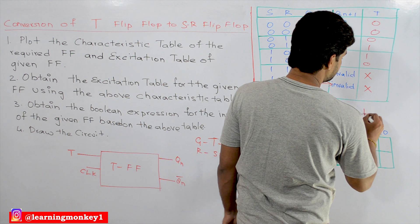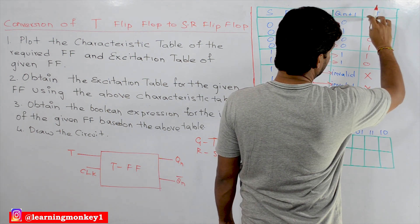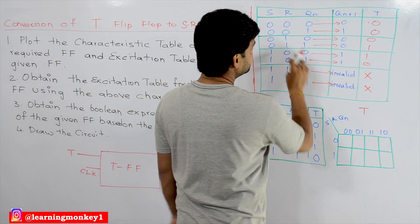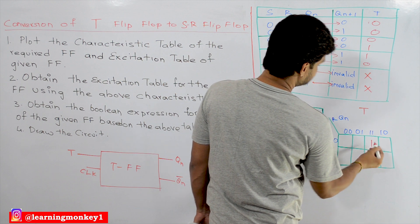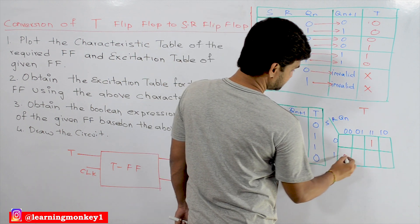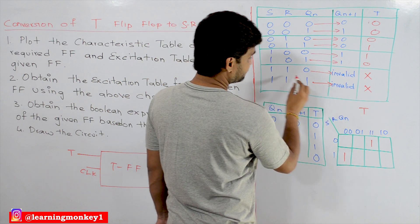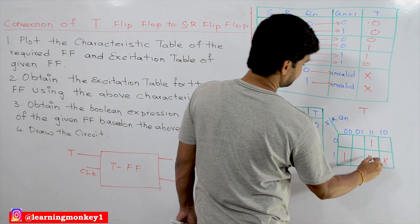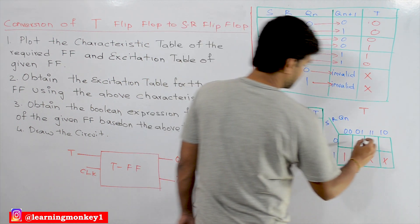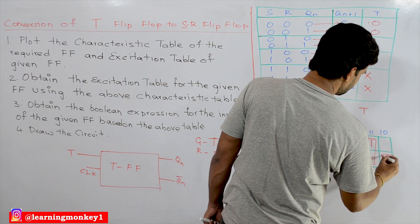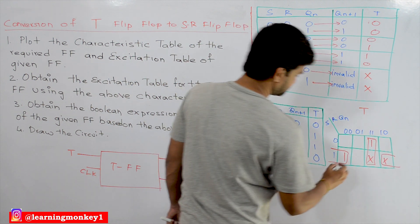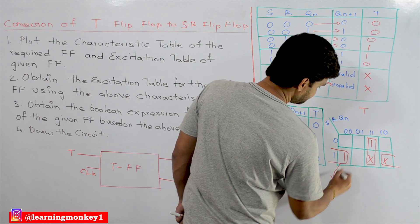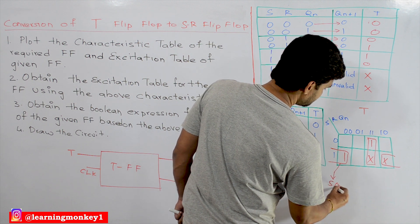We have to minimize this function. The K-map entries are: 0,1,1,0 — with 1,1 forming one subcube and 1,0,0,1 forming another subcube. The don't cares are at positions 1,1,0 and 1,1,1. With these two subcubes, the minimized equation for T is: T = S·Q̄n + R·Qn.